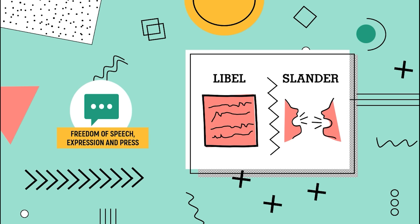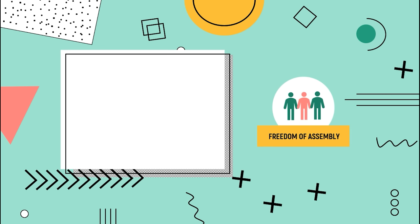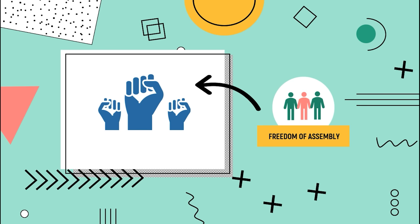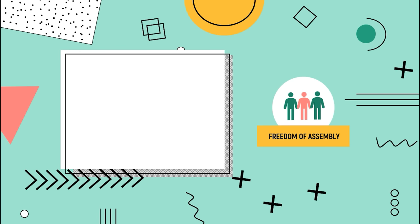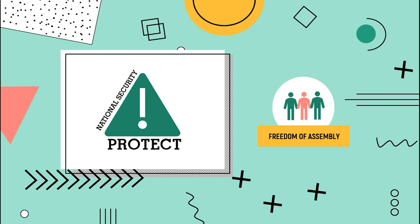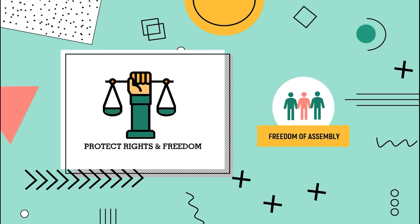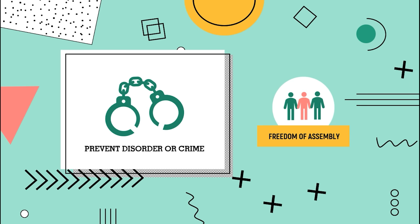Let's move on to the freedom of assembly. This refers to the right to hold a rally or to voice out grievances against the government. There are some situations in which public authorities can restrict your right to freedom of assembly: first, to protect national security or public safety; second, to protect the rights and freedoms of other people; and last, to prevent disorder or crime.